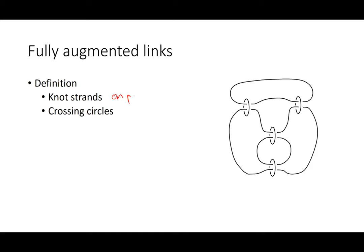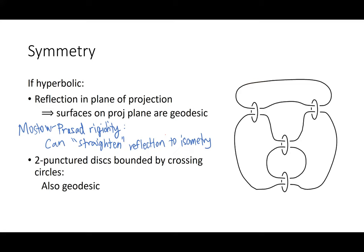This is a picture of a fully augmented link. In general, fully augmented links have two types of link components: the knot strands, which lie on the projection plane, and crossing circles — these little unknotted circles that always bound a twice-punctured disc, where the disc is punctured by strands of the knot. You think of them as perpendicular to the projection plane.